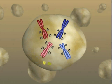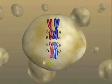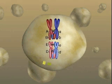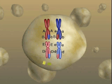During prophase of meiosis, homologous chromosomes pair and non-sister chromatids exchange sections of DNA through the process known as crossing over, or recombination. The resulting chromosomes may now contain different combinations of alleles than were found in the chromosomes inherited from the parents.